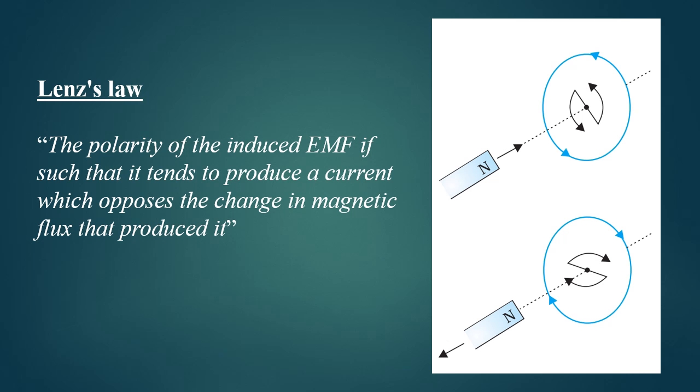Looking at the diagram, when the north pole of the magnet is brought closer to the coil, the current flows in anti-clockwise direction. Due to this, the coil behaves as north pole and hence the magnet is repelled by the coil.